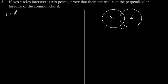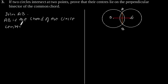First join AB and AB is the chord of the circle centered at point O. That means this circle which can be observed from this figure.